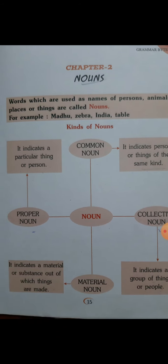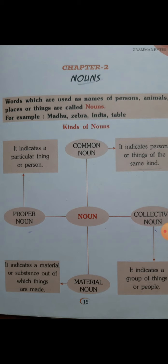So children, the grammar topic is noun. I hope you all have learned it in Class 1, Class 2, Class 3, and now I am going to take a quick revision of noun in Class 4 as well. The definition of noun: words which are used as names of person, animals, place or things are called nouns. Any name given to a person, place, animal or thing is called a noun. For example: Madhu, zebra, India and table — these are all nouns.